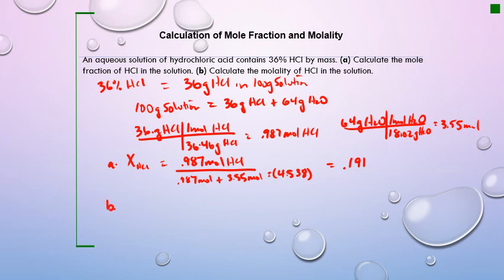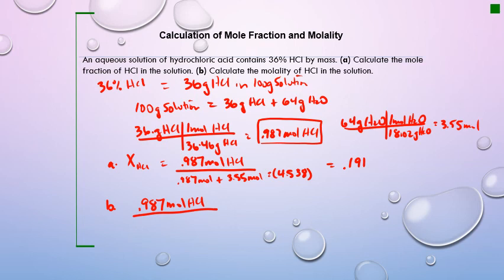For part B — calculating molality of the same solution: using 0.987 mol HCl divided by the kilograms of solvent (64 g = 0.064 kg): molality = 0.987 ÷ 0.064 = 15.4 m.